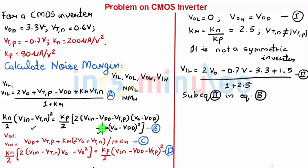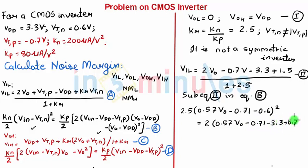We need to substitute equation 2 for VIL in equation B where VIN equals VIL. Let's rewrite this: 2.5 into 0.57 V out minus 0.71 minus 0.6 whole square equals twice into 0.57 V out minus 0.71 minus 3.3 plus 0.7 into V out minus 3.3 minus V out minus 3.3 whole square. This is equation 3 where I substituted equation 2 in equation B and rearranged the terms.